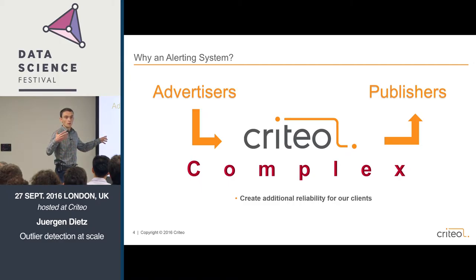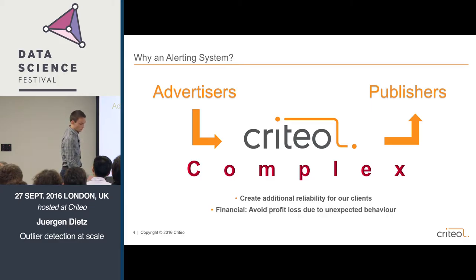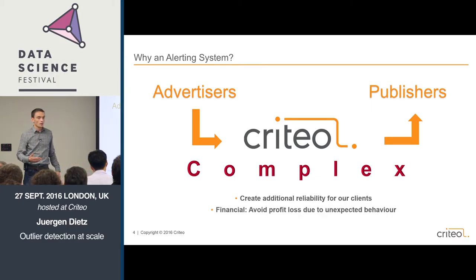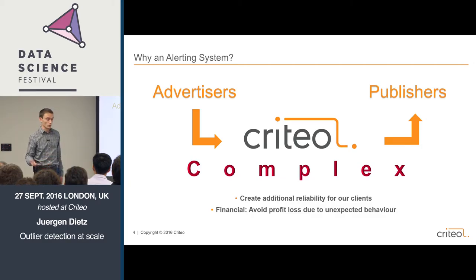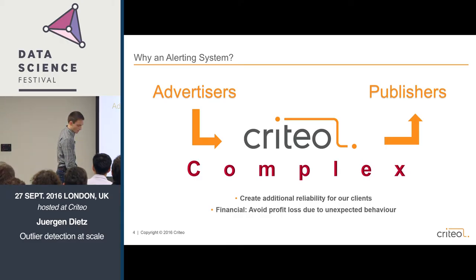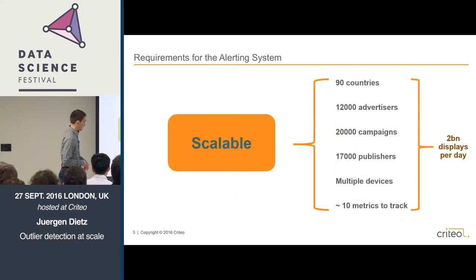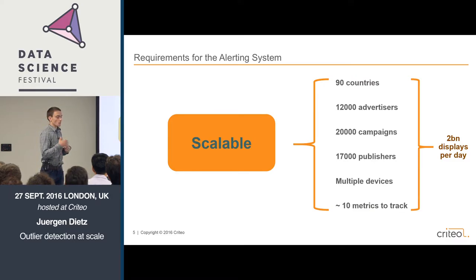Obviously that system can go astray and we want to avoid that. Two main reasons: we want to create reliability for clients — advertiser clients and publisher clients — so that whenever something doesn't behave normally, we want to be reacting almost immediately, going back to the root cause and fixing it. But obviously there's also the benefit that sometimes there might be a financial loss on the part of Criteo, publishers, and advertisers. We want to minimise any loss that we could make. The alerting system is supposed to bring those two benefits.